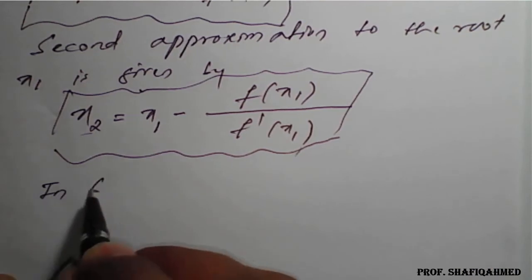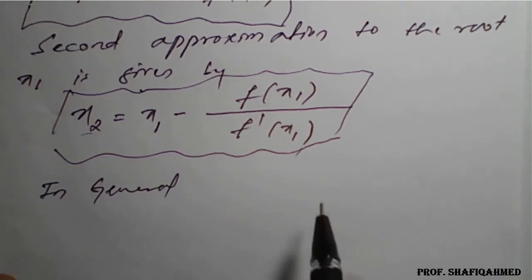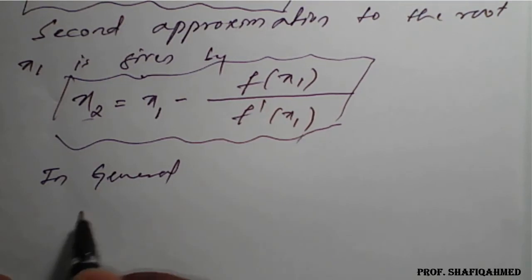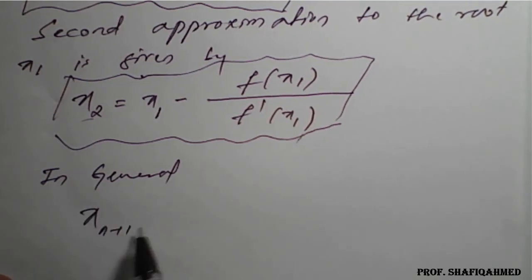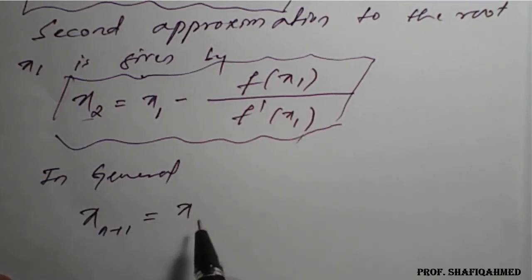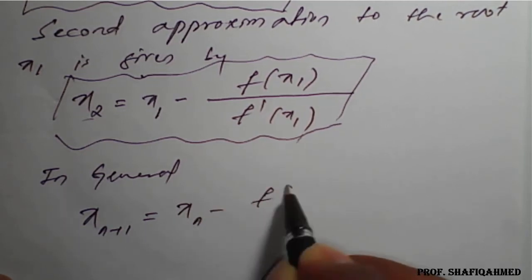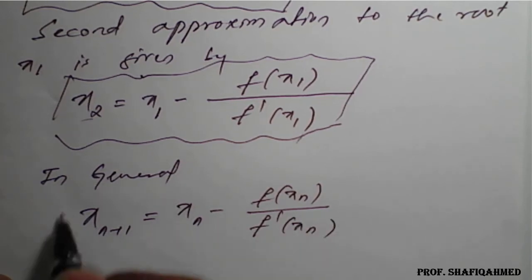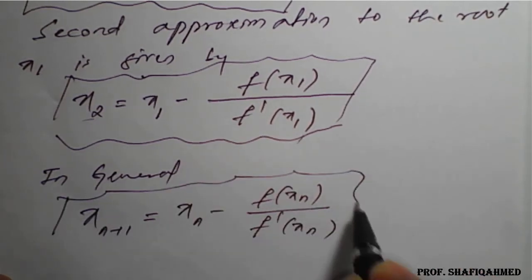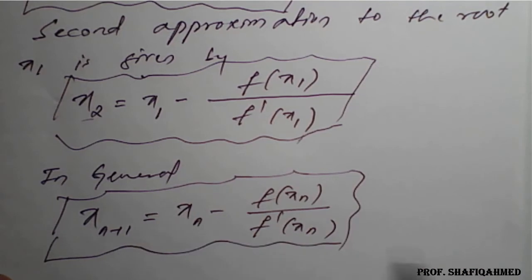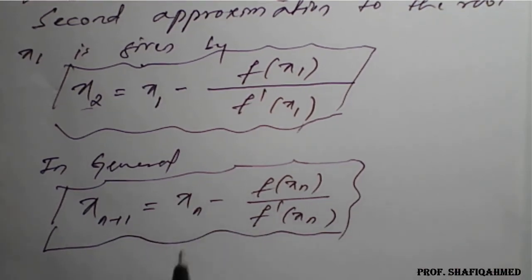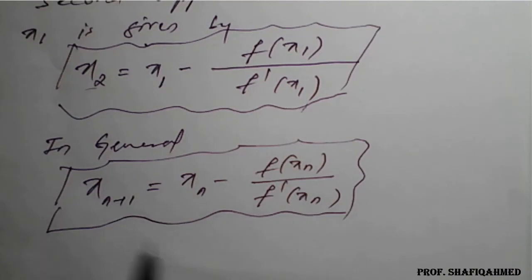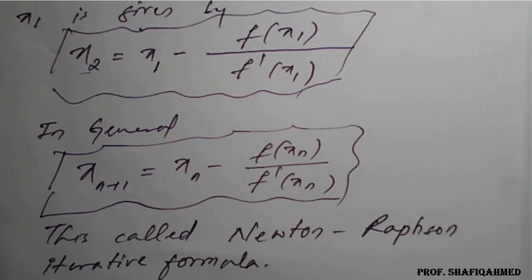In general, we can write it as xₙ₊₁ = xₙ - f(xₙ)/f'(xₙ). This is called the Newton-Raphson iterative formula.